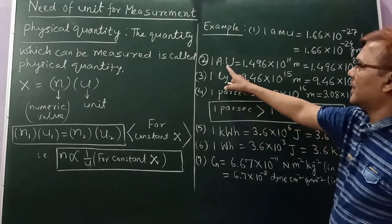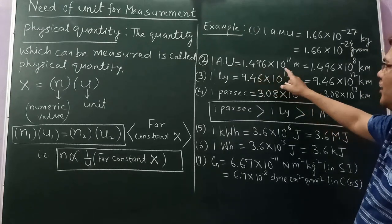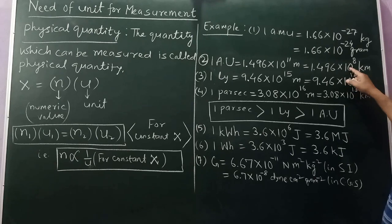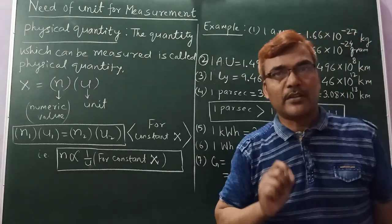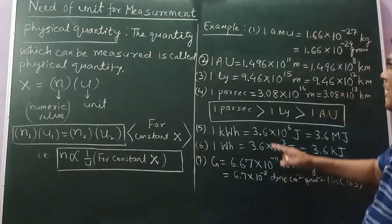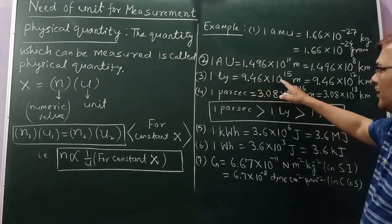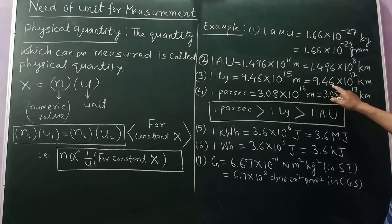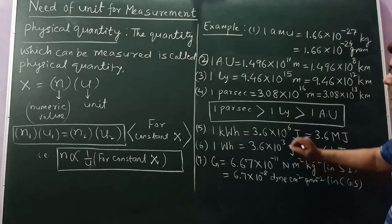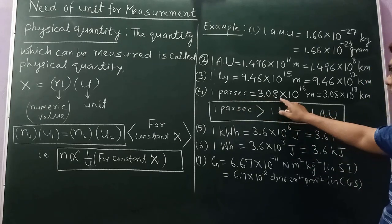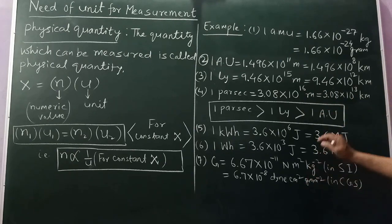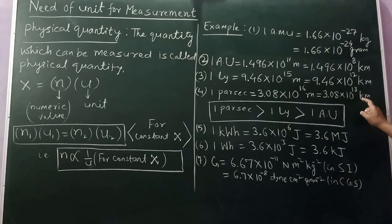In the same way, one astronomical unit is 1.496 into 10 to the power 11 meter. If we write in kilometer, it becomes 10 to the power 8 because 1 kilometer has 1000 meters, which means 10 to the power 3. One light year is 9.46 into 10 to the power 15 meter, which can also be written as 9.46 into 10 to the power 12 kilometer.